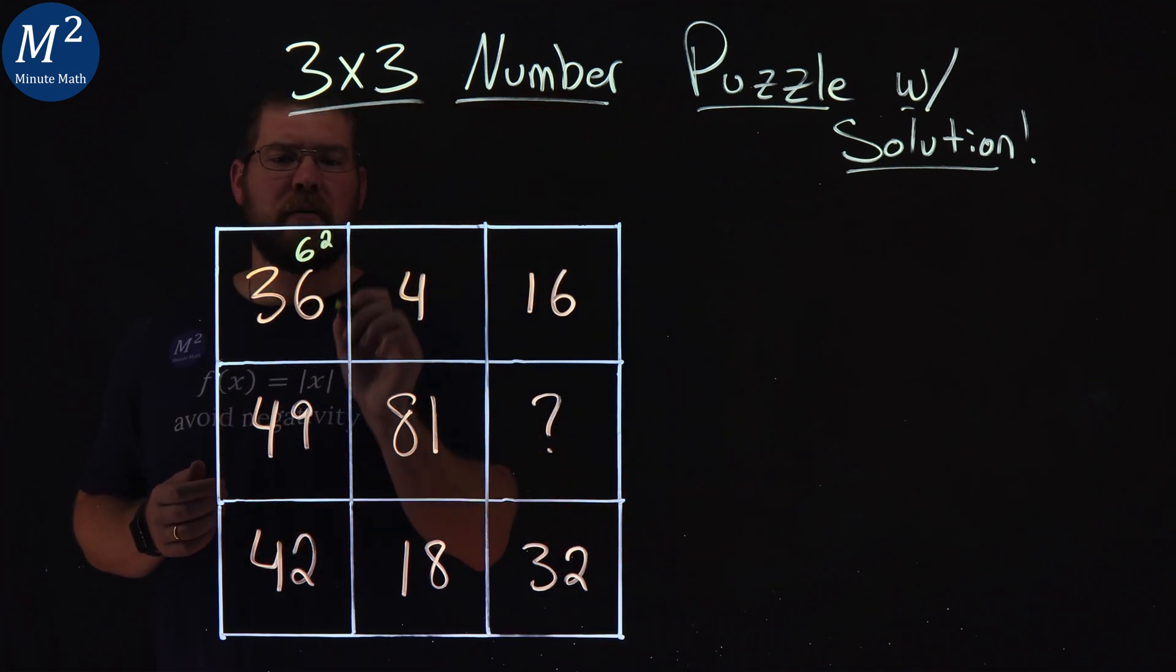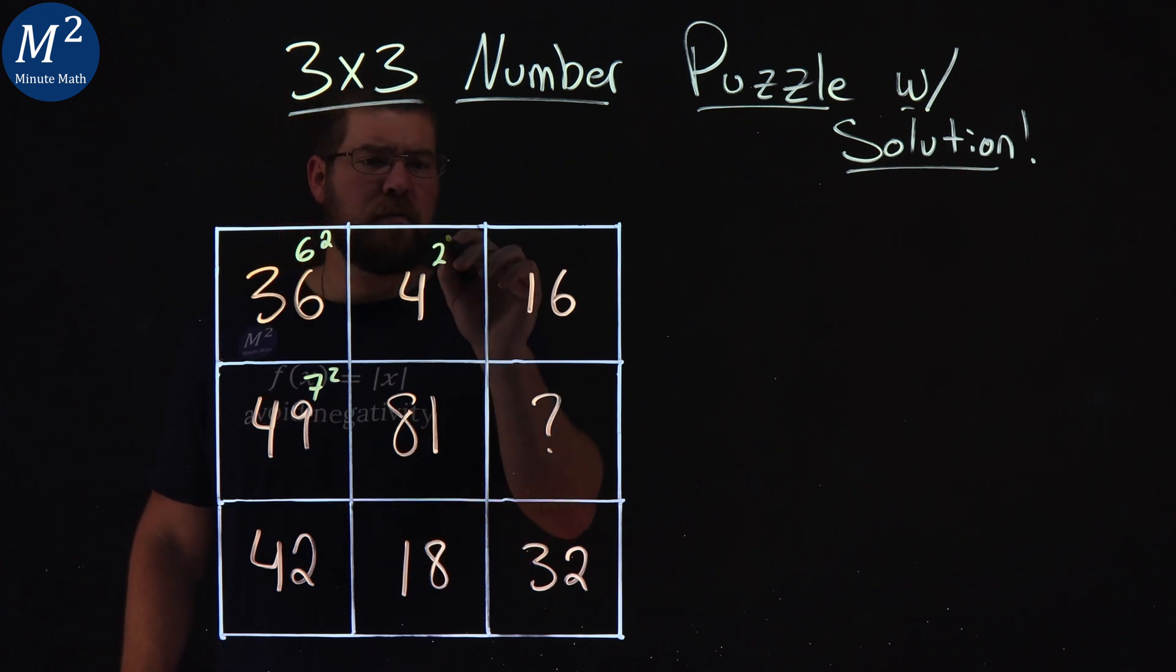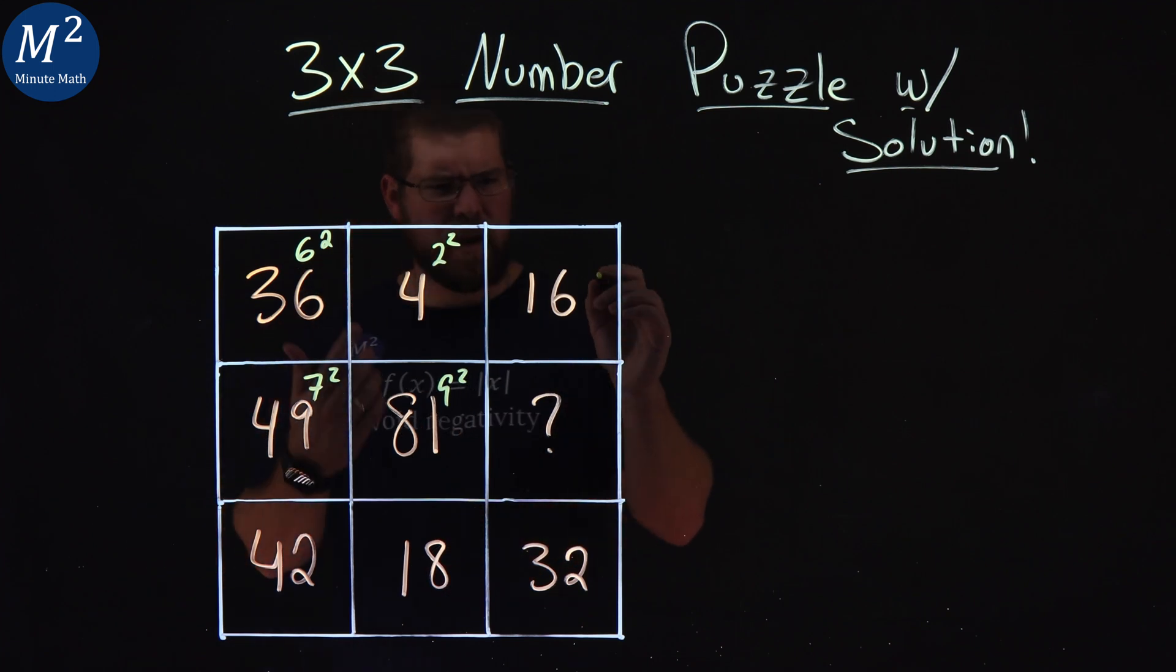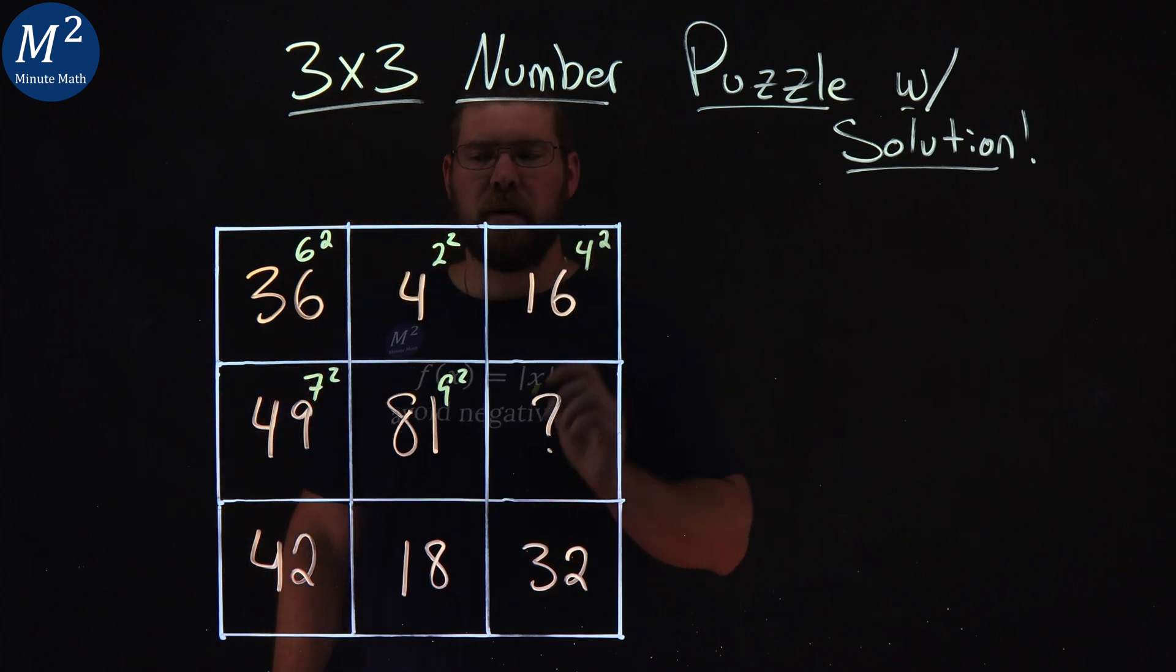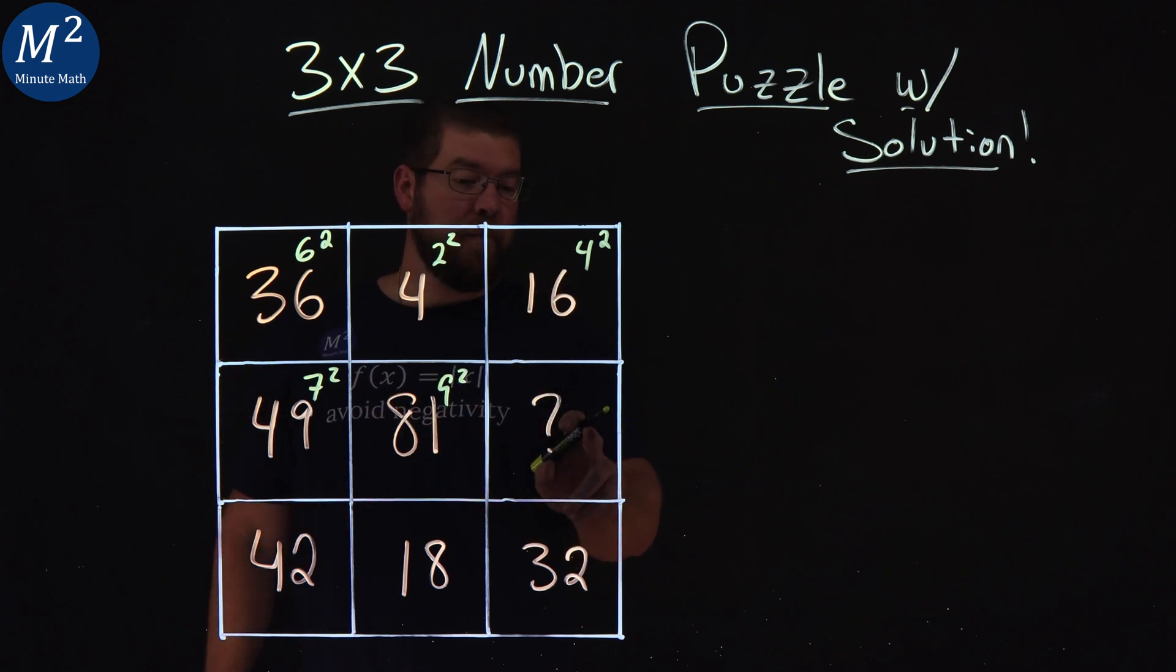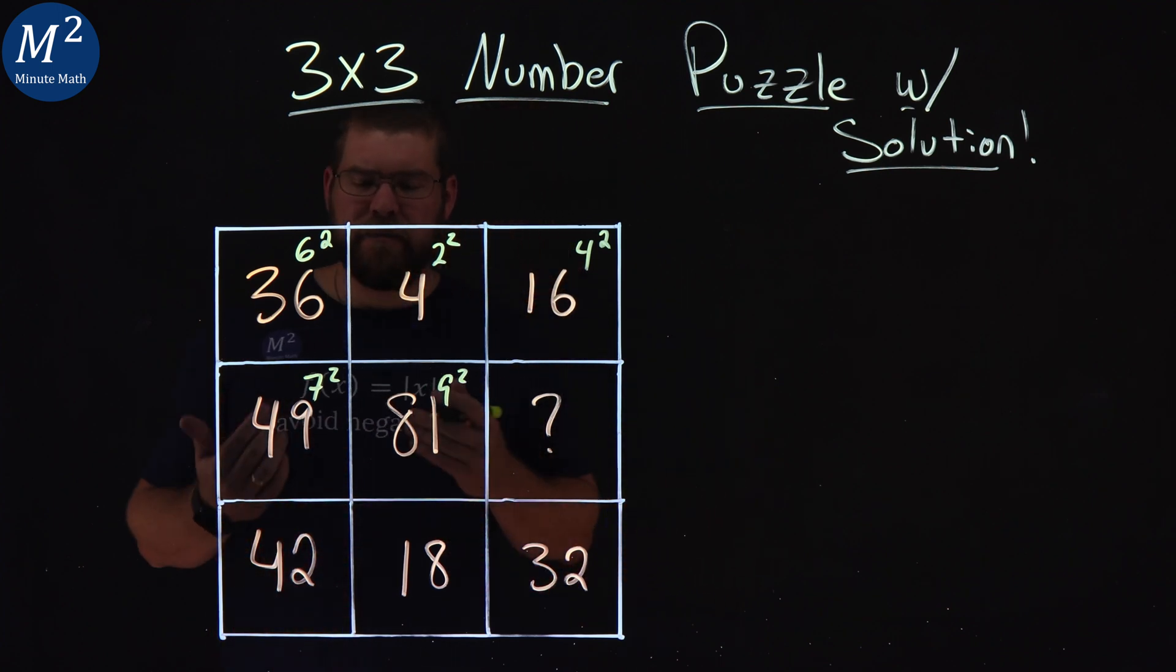36 is 6 squared, right? 49 is 7 squared, 4 is 2 squared, 81 is 9 squared, okay? And 16 is 4 squared. So, if all of these are numbers squared, maybe this one's a number squared. Let's see if we can get there.